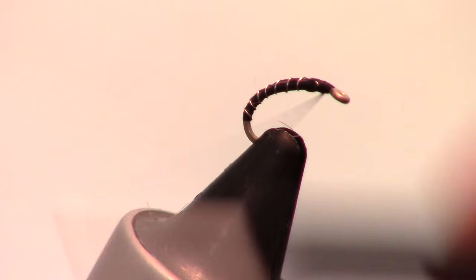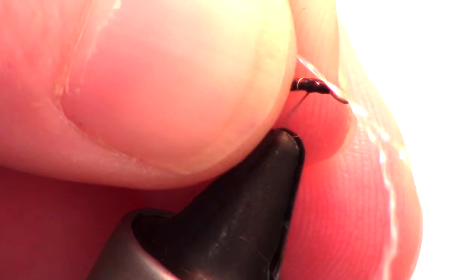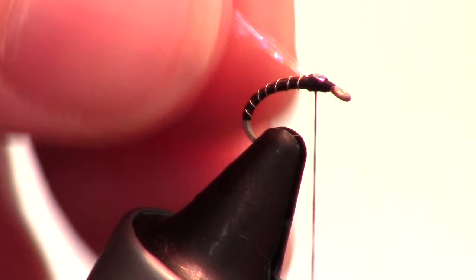Now bring your thread back to the start of the head of the fly and attach two strands of Crystal Flash in the center of the clump. Then pull the two tag ends back and tie those down as well.